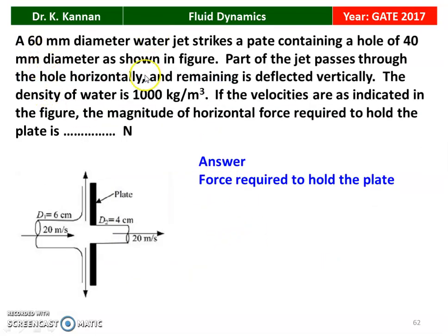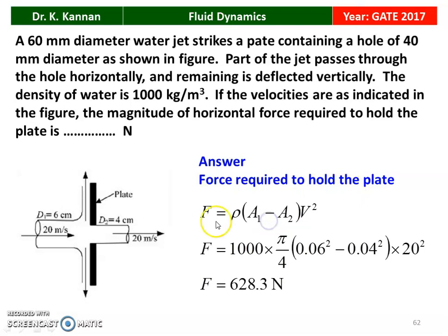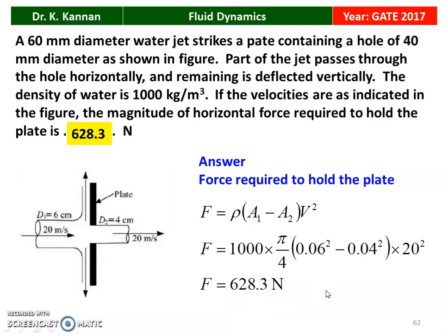A 60 mm diameter water jet strikes a plate containing a hole of 40 mm diameter. Part of the jet passes through the hole horizontally and the remaining is deflected vertically. With water density 1000 kg/m³ and velocity 20 m/s, the horizontal force required to hold the plate is F = ρ × (π/4)(D₁² − D₂²) × V² = 1000 × (π/4)(0.06² − 0.04²) × 20² = 628.3 Newton. The answer is 628.3 Newton.